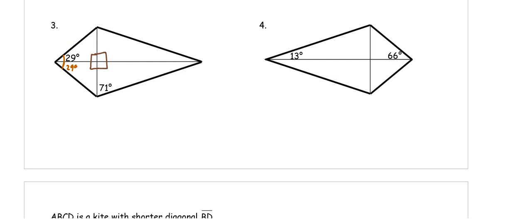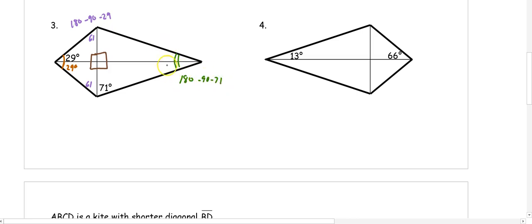To find the missing angles in those triangles, we do 180 minus 90 minus 29, and we get 61°. That 61° goes in both of those triangles because they're congruent right triangles — they both had a 90° and a 29° angle. Then in our other triangle, if this is 71° and the angles are bisected, we do 180 minus 90 minus 71, and we get 19° and 19°. The still-missing angle has to be 71° because those two triangles are congruent right triangles.